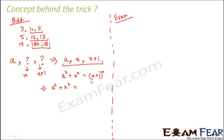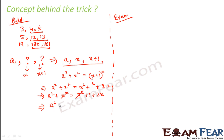Expanding (x + 1)² gives x² + 1 + 2x. So we have a² + x² = x² + 1 + 2x. The x² terms cancel, giving a² = 1 + 2x, or 2x = a² − 1. Therefore, x = (a² − 1) / 2.